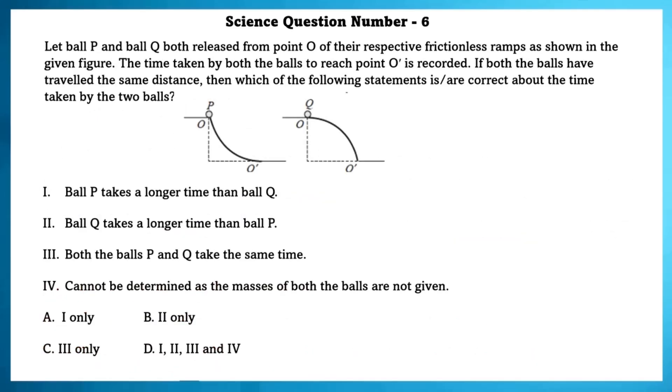Science Question Number 6. Let ball P and ball Q both release from point O of their respective frictionless ramps as shown in the given figure. The time taken by both the balls to reach point O is recorded. If both the balls have travelled the same distance, then which of the following statement is or are correct about the time taken by two balls? At the start, downward acceleration of P is more. As path length is same, P will take lesser time. Ball Q takes longer time than ball P.